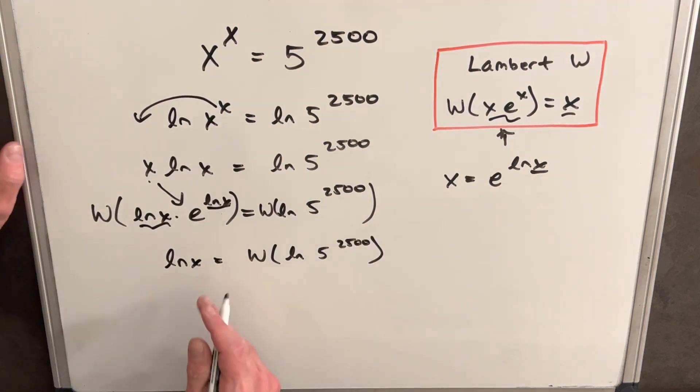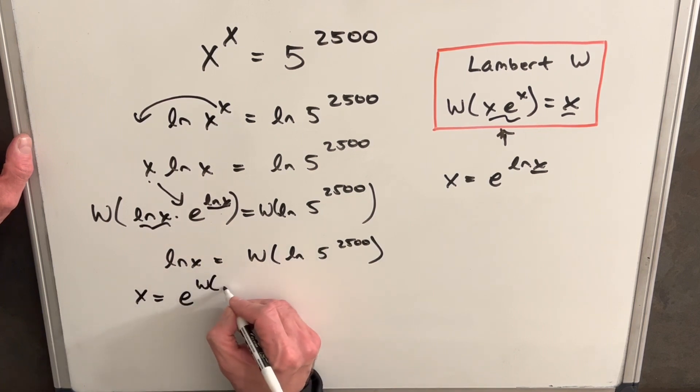Then just using this definition of the logarithm, we can say this is the same thing as x equals e to the Lambert W of ln 5 to the 2,500.